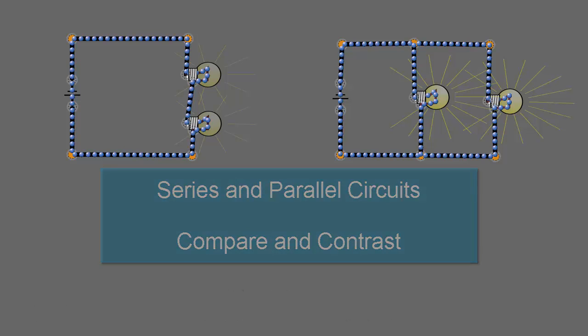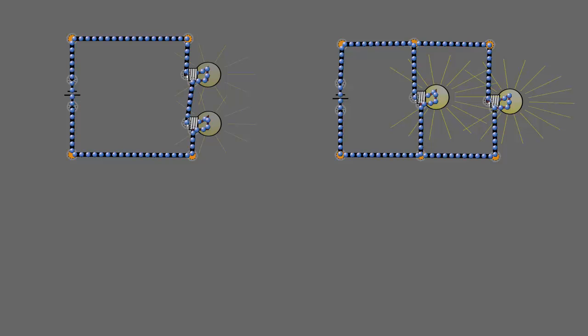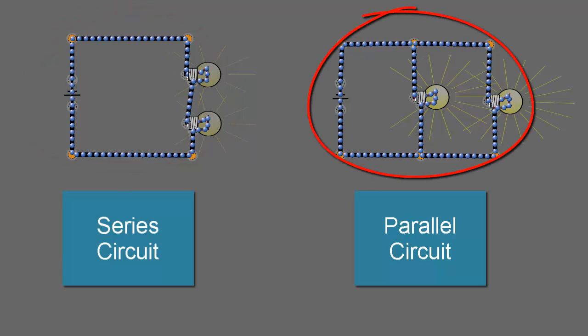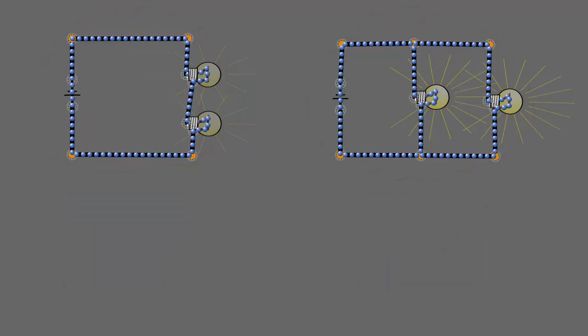So I have two circuits here, a series circuit on the left and a parallel circuit on the right. We're going to get the currents flowing through these circuits to give you an idea of what's going on in each circuit.